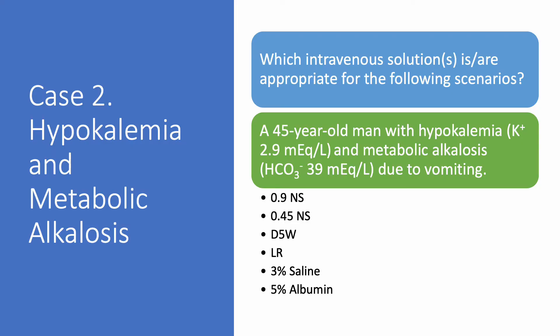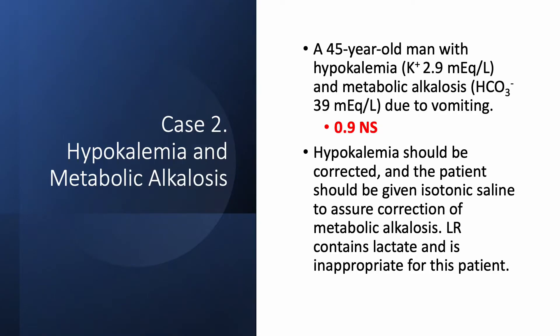Case number two: hypokalemia and metabolic alkalosis. We have a 45-year-old man with hypokalemia, potassium 2.9, and metabolic alkalosis with a serum CO2 of 39 due to vomiting. The correct answer is 0.9% normal saline. For someone with metabolic alkalosis, you must do two things: correct the hypokalemia and give 0.9% normal saline to provide chloride. Lactated Ringer is a bad choice because it has lactate, which gets converted into bicarbonate, and the bicarbonate is already elevated.